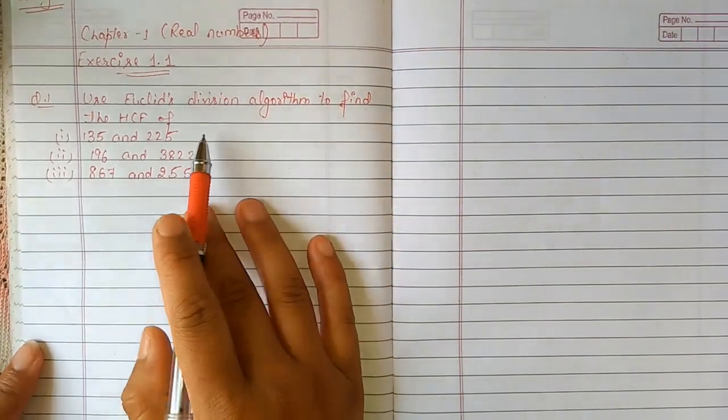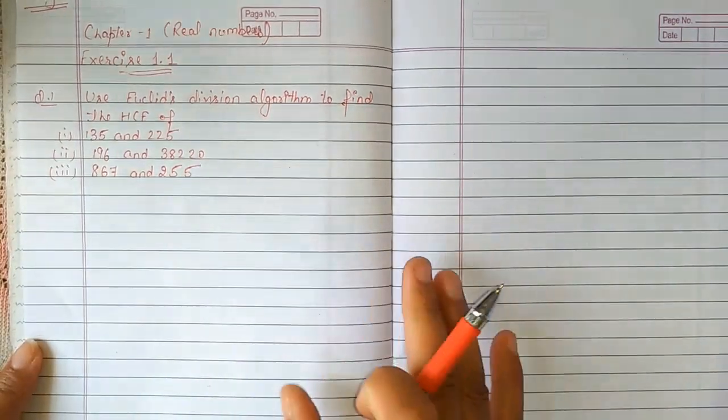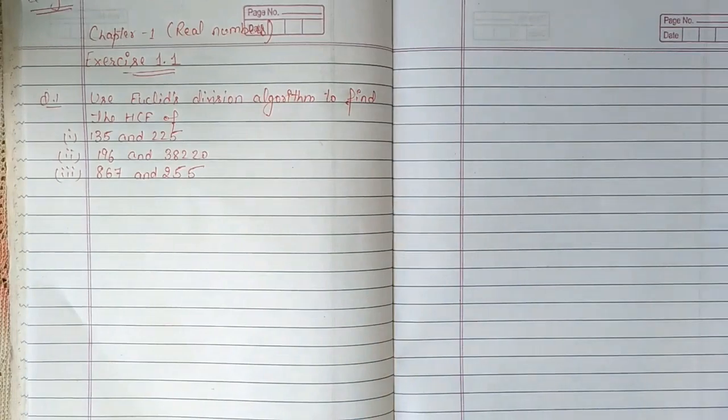In the first exercise, question number 1 is: Use Euclid's Division Algorithm to find the HCF of some numbers in 3 parts.